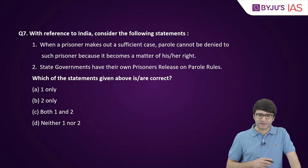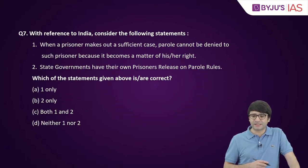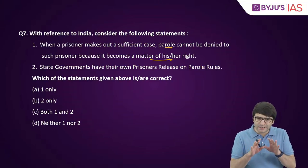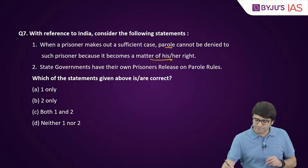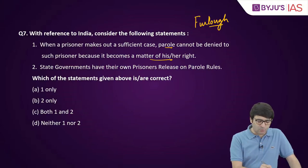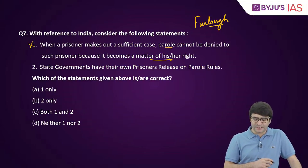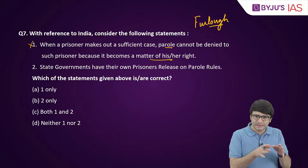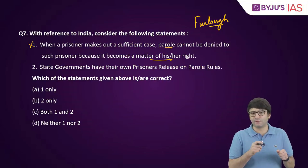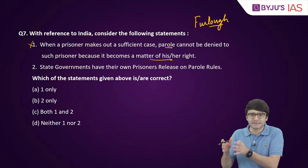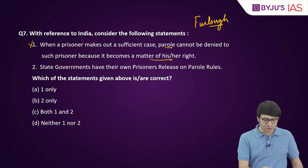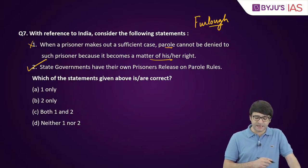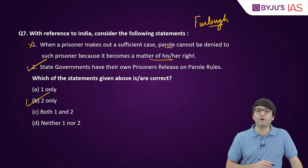Question seven: about parole in India. Statement one says when a prisoner makes out a sufficient case, parole cannot be denied because it becomes a matter of right — this is incorrect; parole is at the discretion of the authorities. Statement two says state governments have their own prisoners' release on parole rules, which is correct because prison is a state subject under the Seventh Schedule state list. So B, two only, is the right answer.